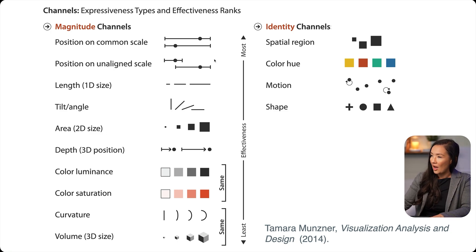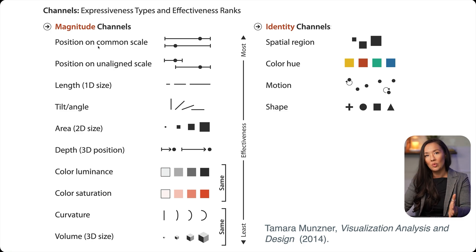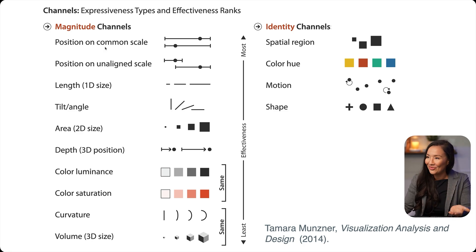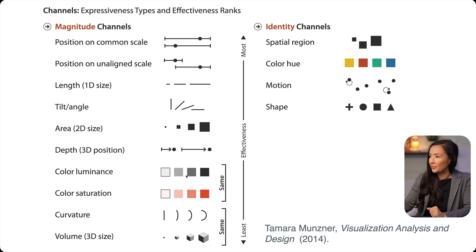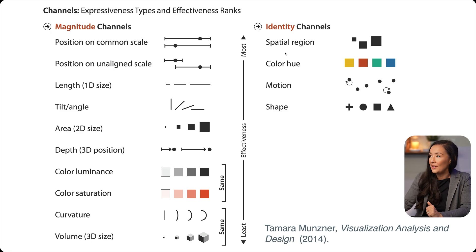Here we have a fantastic figure from Tamara Munzner's book, which I highly recommend. It summarizes a great deal of empirical research on these different channels, starting all the way back in the 70s. At the top we have the most effective and at the bottom the least effective. For magnitude — a continuous value — the most effective encoding channel is position on a common scale, then position on an unaligned scale, and then it goes in descending order. For categorical values or different groups, you look at identity channels, where the most effective is spatial region, followed by color hue and downwards.